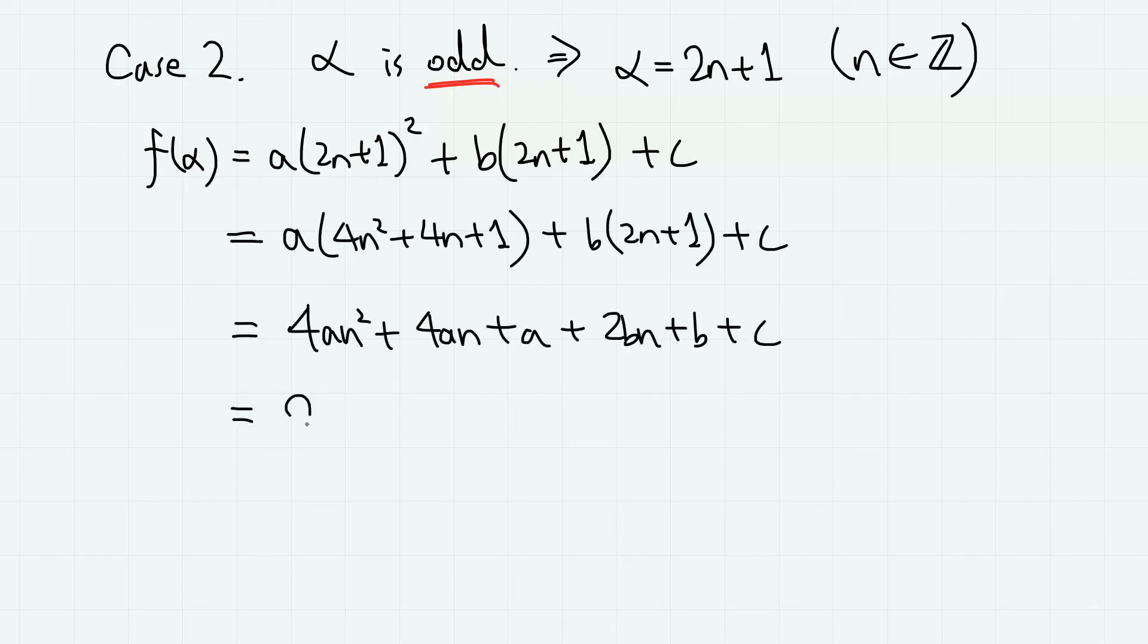Now here, let's take out 2 again, then these terms give 2(an² plus an plus bn). Then, for the remaining terms, we have a plus b plus c.